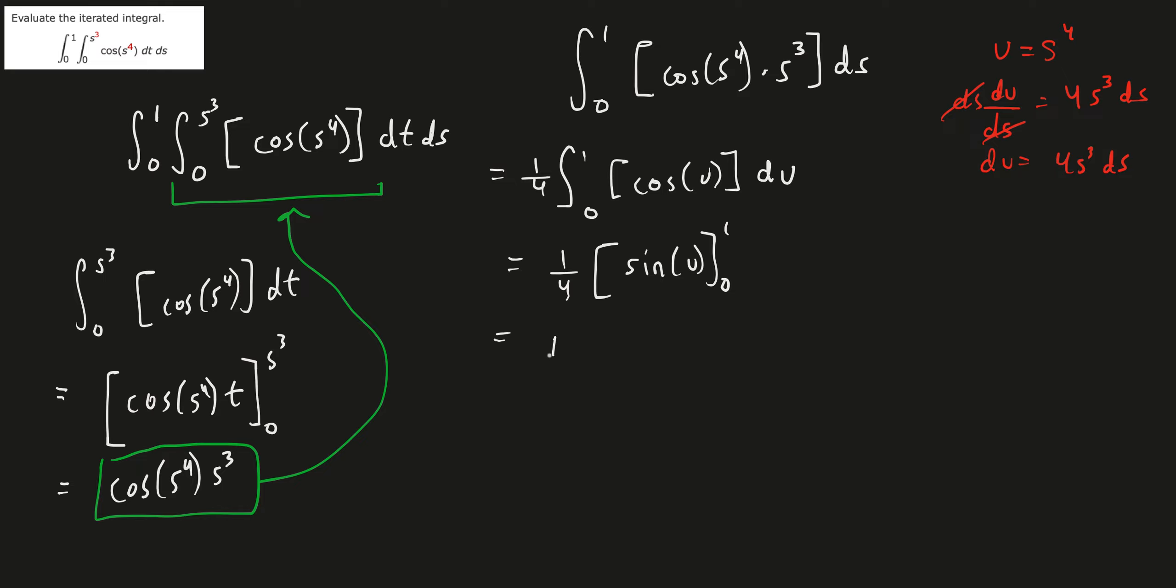So that's going to be 1 fourth sine of 1 minus sine of 0. Sine of 1 is not a nice number, but we know from our unit circles.